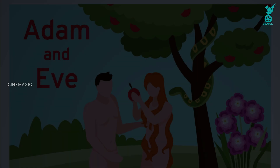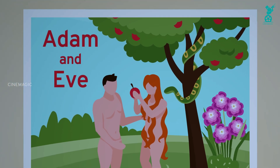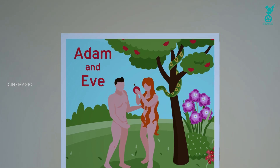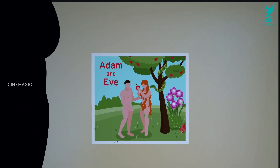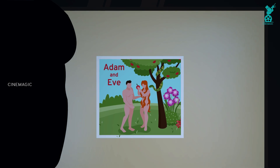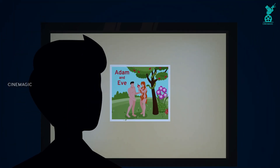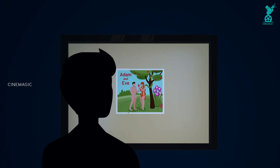When Darwin's theory saw the light of day, it was met with severe criticism. The primary cause of this was the deeply entrenched Christian faith of Darwin's contemporary society. Darwin's theory disrupted the belief that God created man and that man is superior to all creatures. Hence, it was only years after Darwin's death that his theory gained global acceptance.